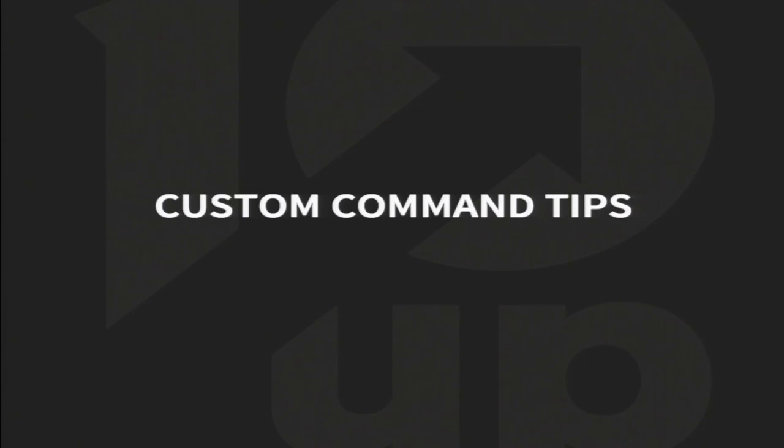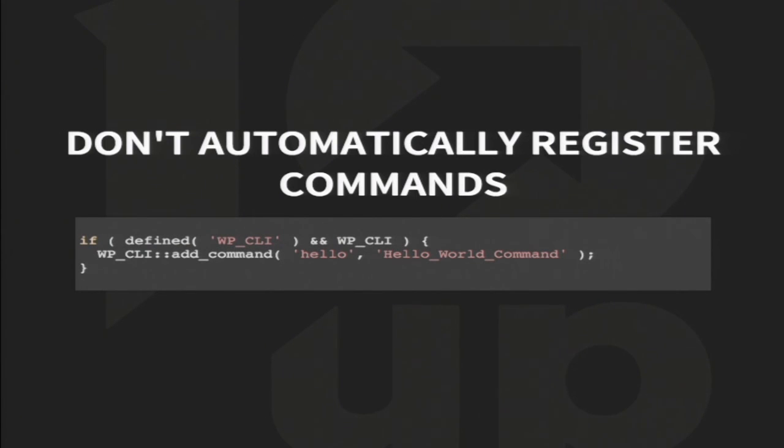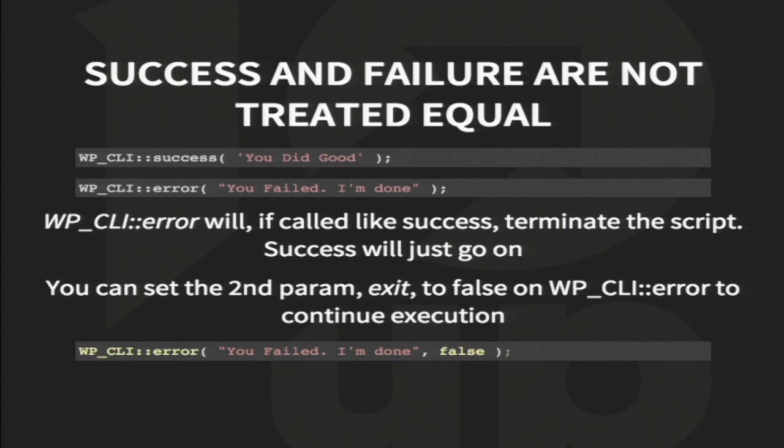There are some important tips. First: don't automatically register your commands. WP-CLI sets a constant called WP_CLI whenever it runs. Rather than loading a command with 50,000 sub-commands every page load, wait until WP-CLI is actually running — check for the WP_CLI constant, then do your add_command. I have slowed down a few sites by skipping this, so the bigger the command, the more important this is. Also, be careful with success and failure — they're not treated the same way.